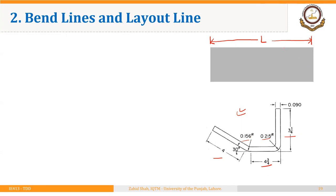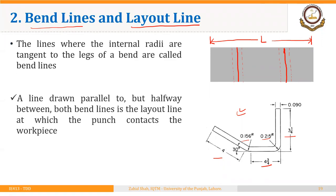The line where the punch should contact the blank to bend it is called the layout line. That is where the center of the punch would contact, and as the punch has a certain radius, this layout line should be at the center of that radius of the bent part. There will be two corresponding lines that will be the terminal points of the radius after the part has been bent, and those lines are called the bend lines. So the solid line is called the layout line and the dotted lines are called bend lines. There are two bend lines related to each layout line.